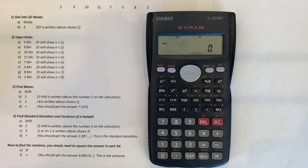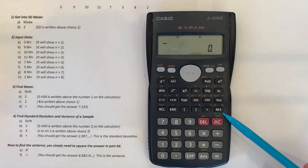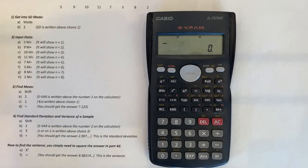Next you want to put in your data one at a time using the M plus key, or the statistical memory key, meaning add to the statistical memory. So you do it one at a time with the M plus key.